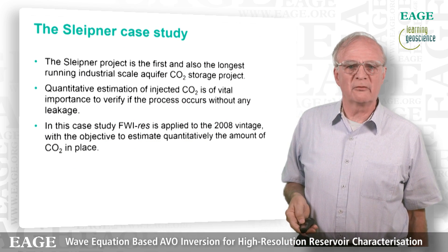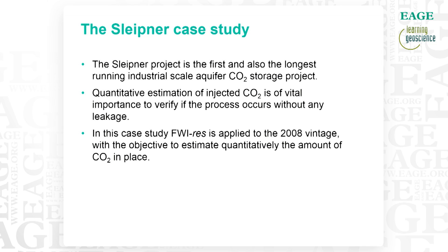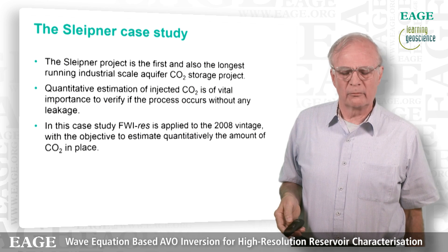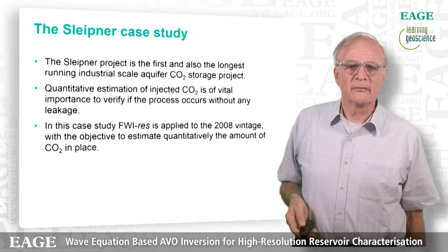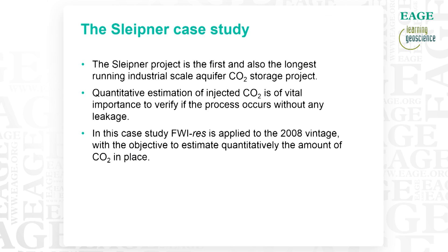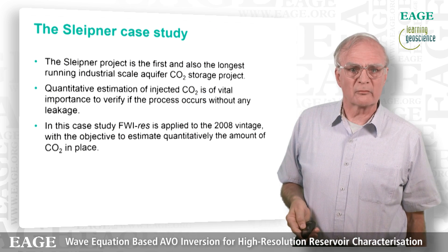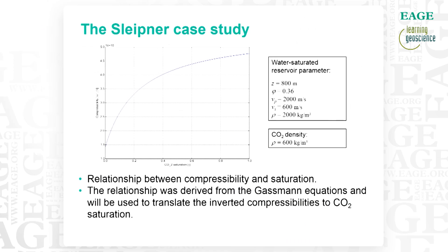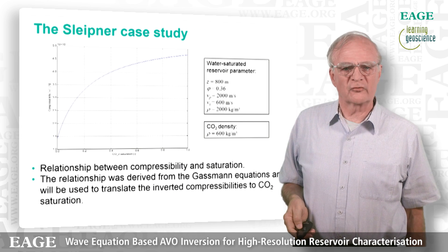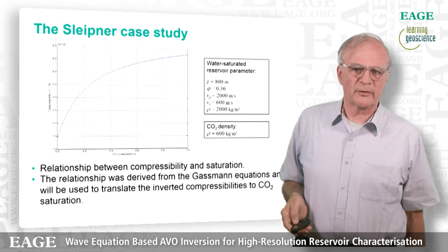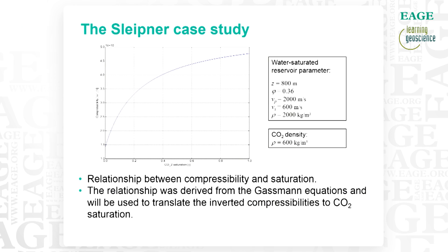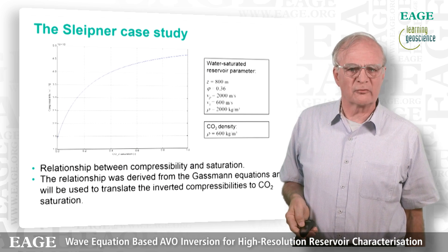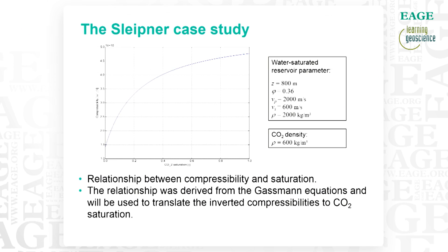The other extreme case study is the Sleipner CO2 storage project, where we attempted quantitative estimation of the amount of CO2 injected — important because if you know what you inject but don't find it back in the inversion, it means something has leaked. We applied this inversion to the 2008 vintage and tried to estimate the quantitative amount of CO2 in place. We use a similar curve as before — compressibility as a function of CO2 saturation from 0% to 100% — assuming a CO2 density of roughly 600 kg/m³. This is the way to translate compressibility predictions from inversion to the actual amount of CO2 injected.